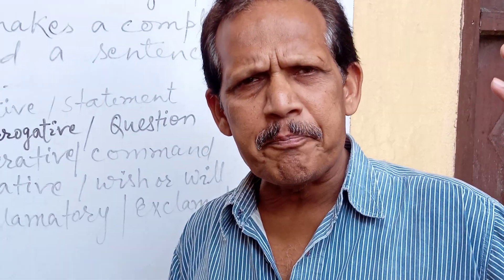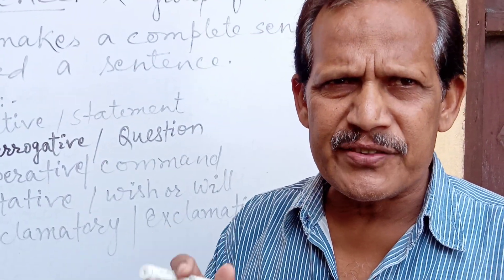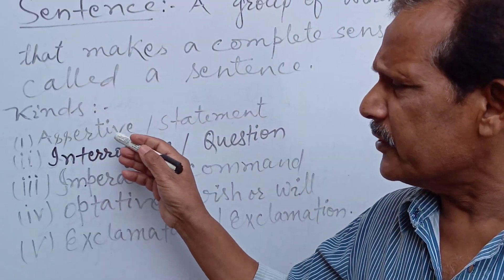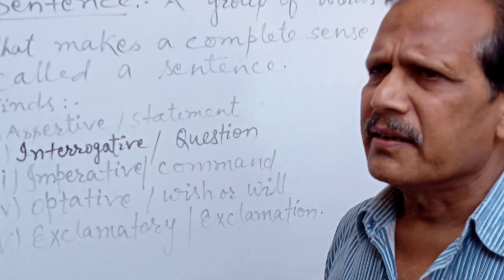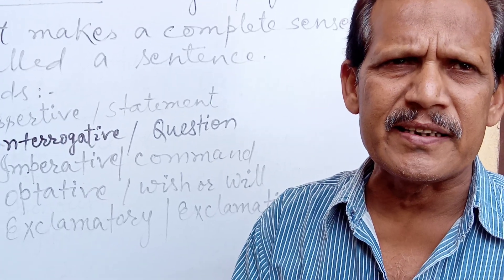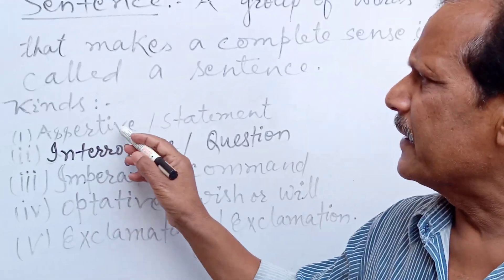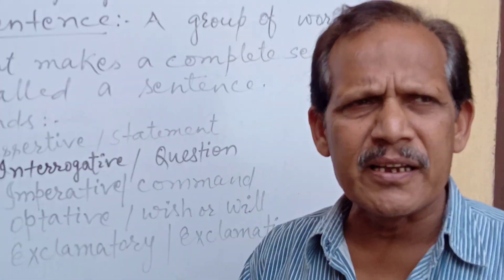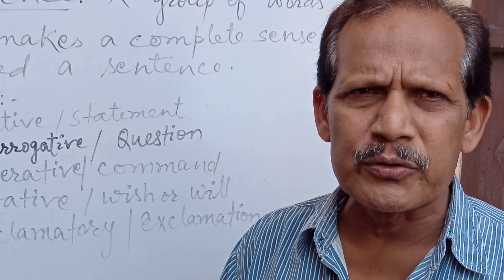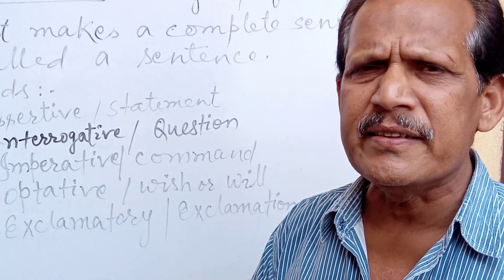For example: 'Boys are playing in the ground.' Here, the sentence says something about the boys — there is a statement that boys are playing in the ground. This type of sentence, which stands for a statement, is called an assertive sentence.